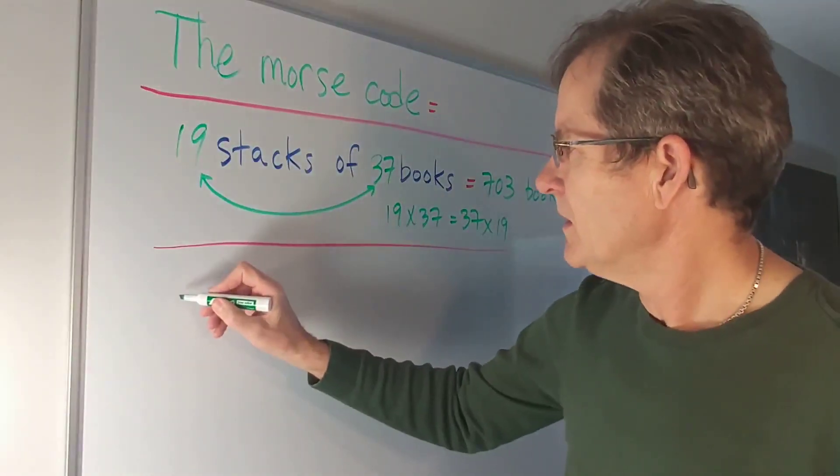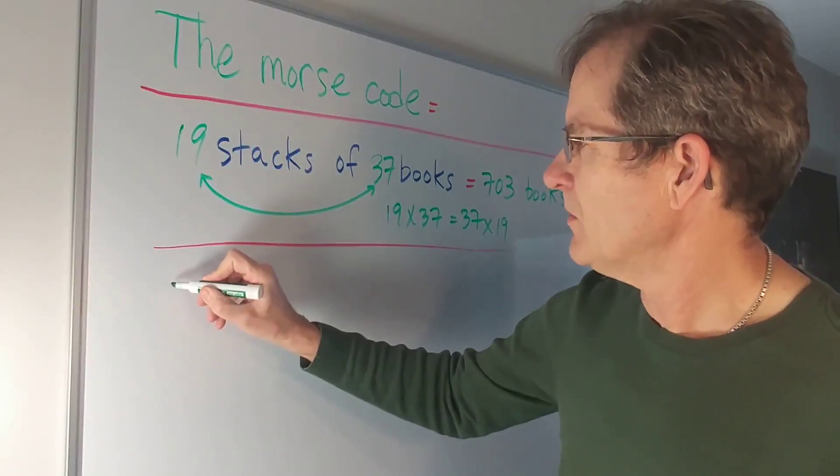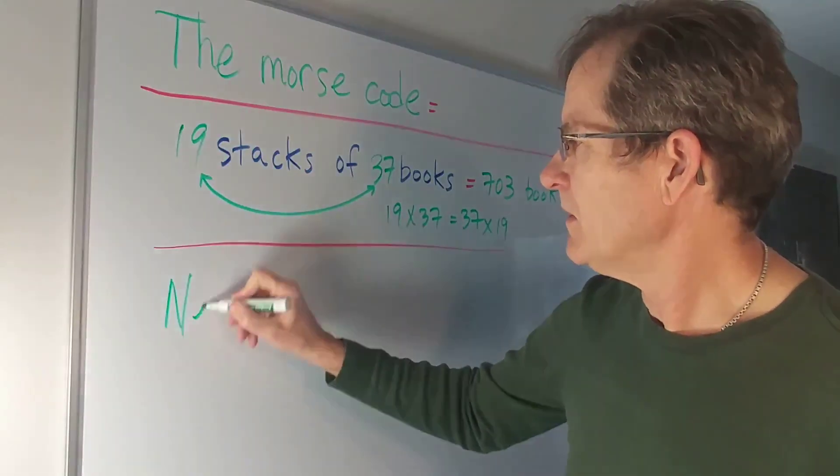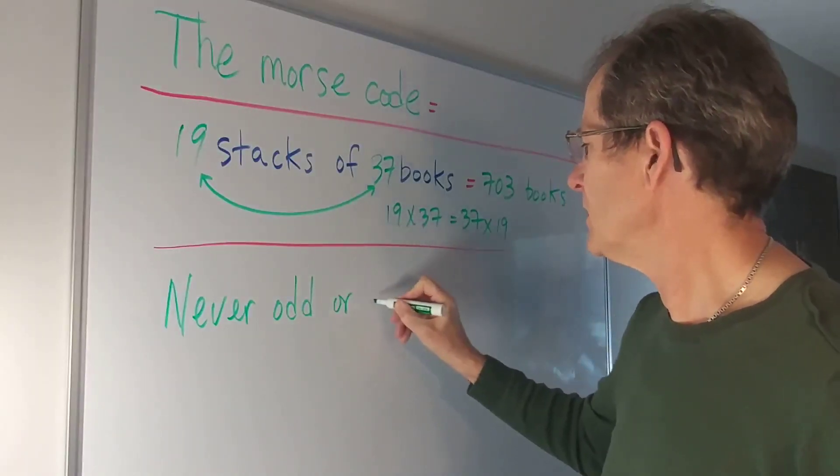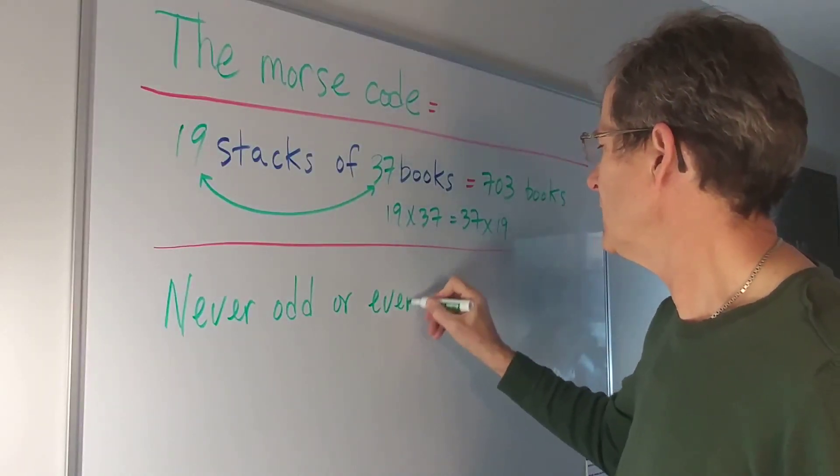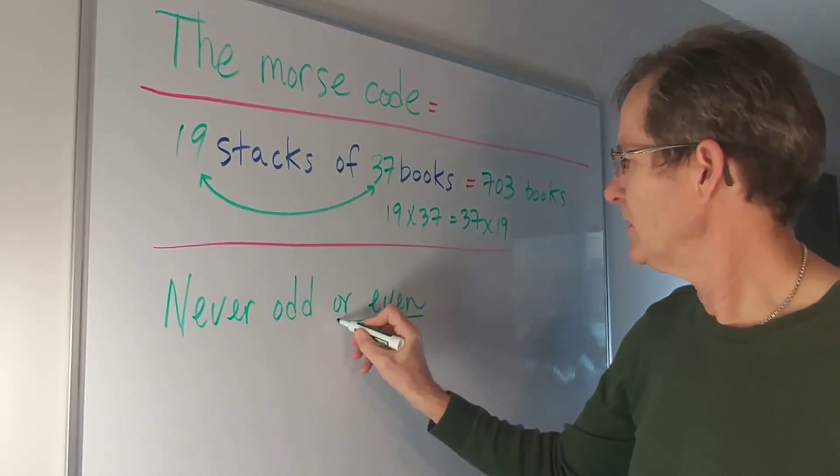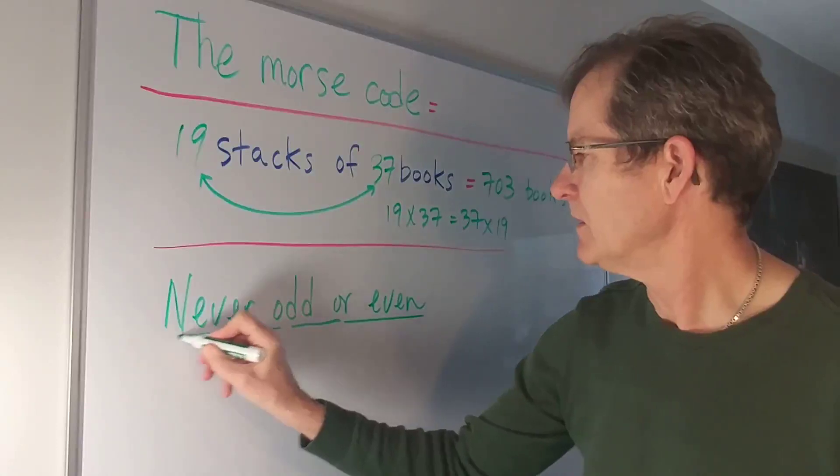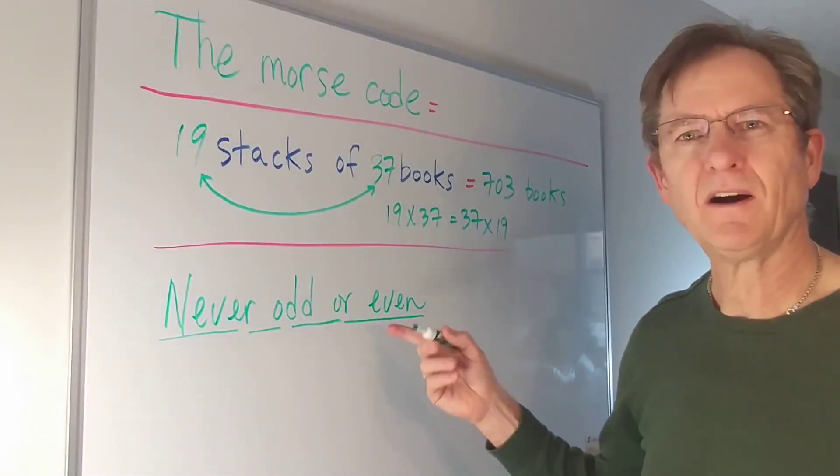Okay, palindromes. One of my favorite, if not my all-time favorite math palindrome is: never odd or even. I suppose it should be 'nor' but then you don't get the palindrome. Never odd or even. Isn't that neat? So what would be never odd or even?